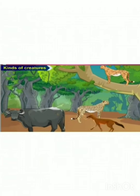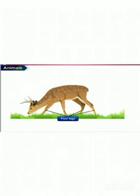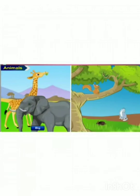Kinds of creatures. First one: animals. All animals have four legs, two ears and one tail. Some animals have horns. Some animals are big and huge while some are small.